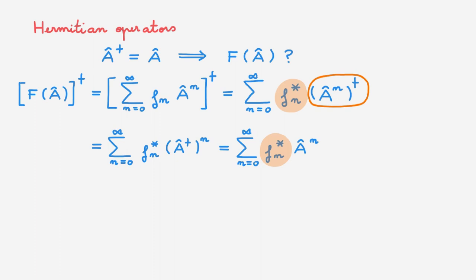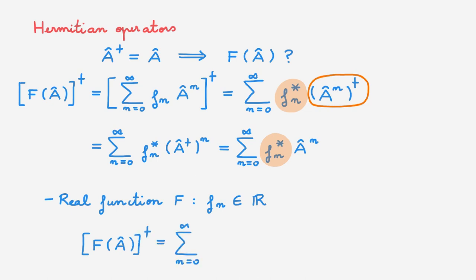However, very often we're interested in real functions f — for example, the exponential function. If f is real, then its expansion coefficients fn are all real numbers, and we can remove the complex conjugate from those terms. Overall, this means that if f is a real function and A is a Hermitian operator, then f(A) is also a Hermitian operator.